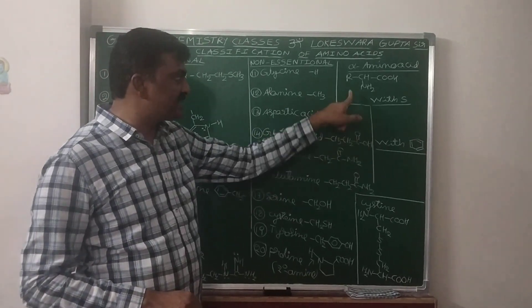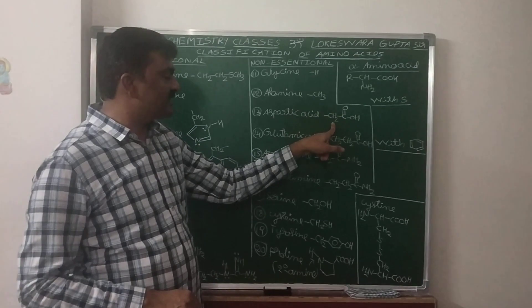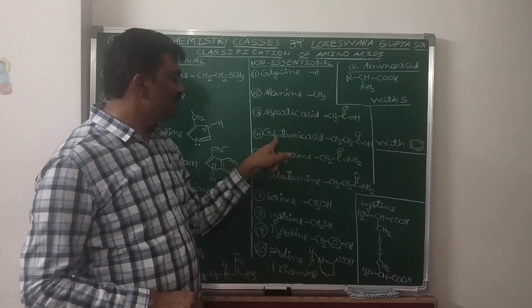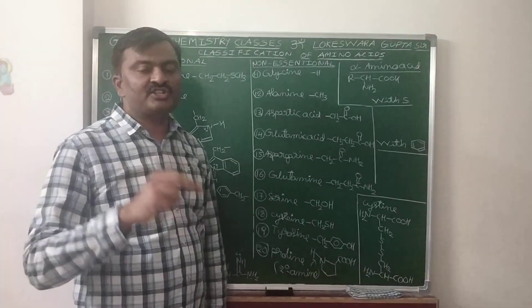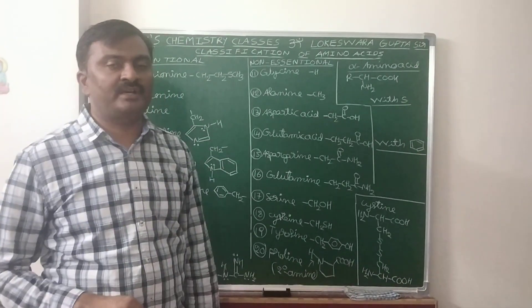In case of aspartic acid, at this alkyl side chain CH2COOH. Glutamic acid CH2CH2COOH. These two are the acidic alpha amino acids.